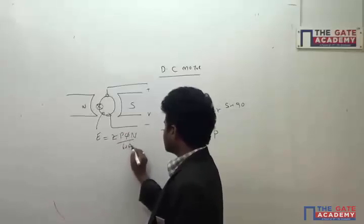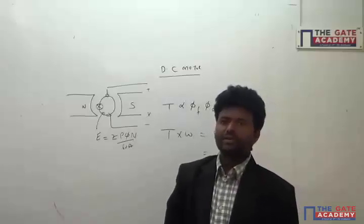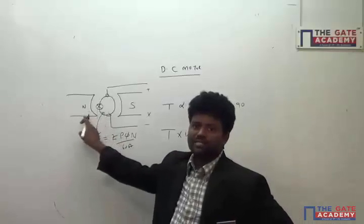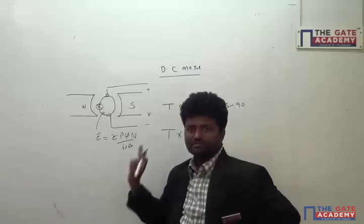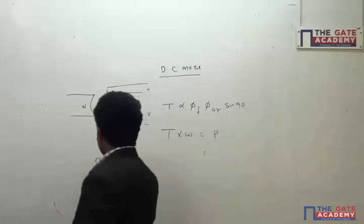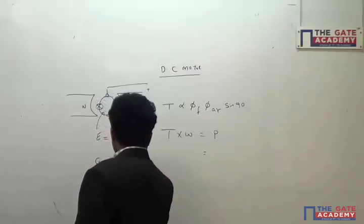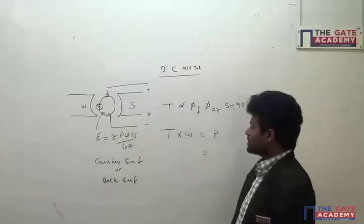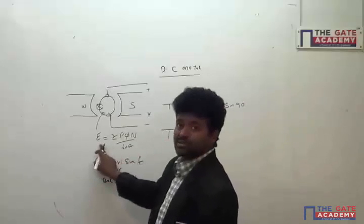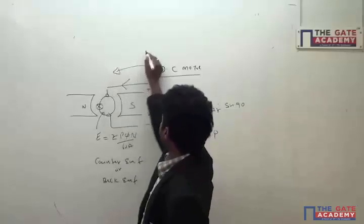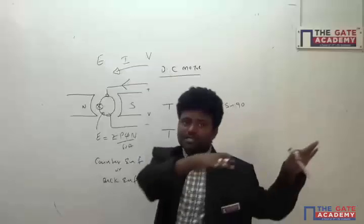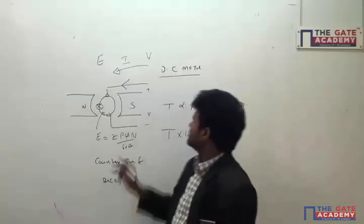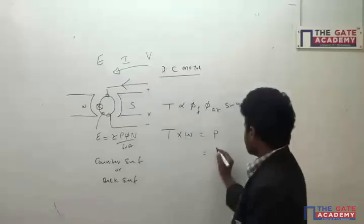The generated EMF in the armature is given by E = ZPφN / (60A). Whether it is a motor or a generator, any rotating conductor in a magnetic field will produce a changing flux and induce an EMF. This EMF is called the counter EMF or back EMF, because it opposes the supply. Since E is less than V, current flows from V to E, from the higher potential to the lower potential.